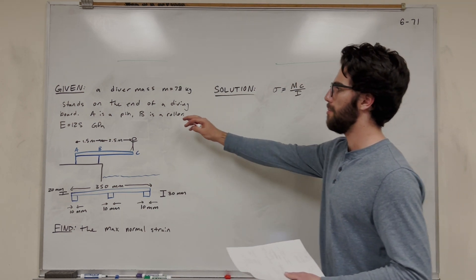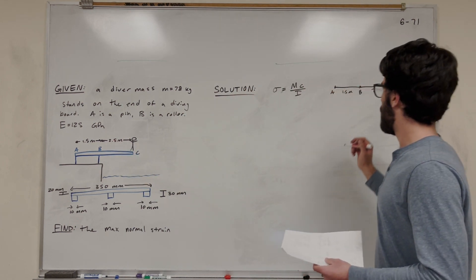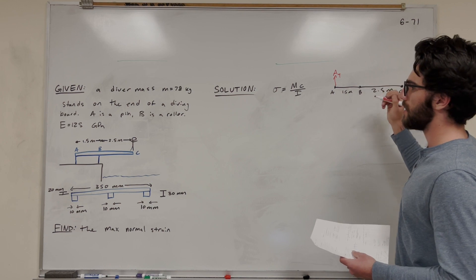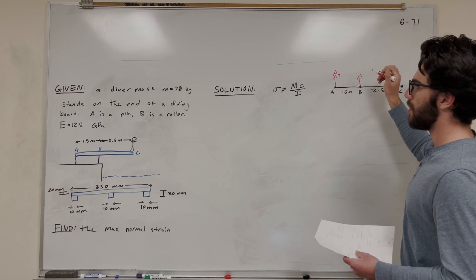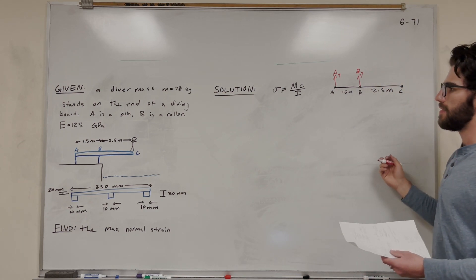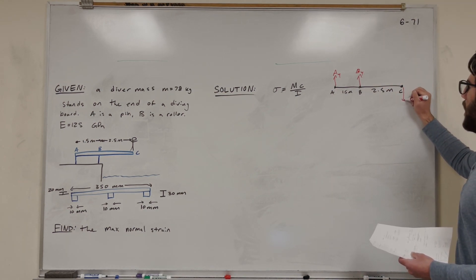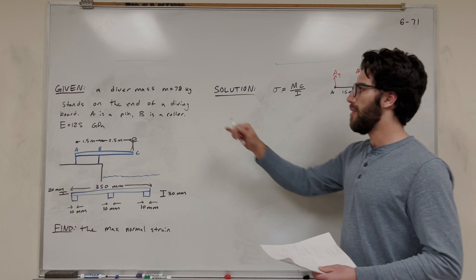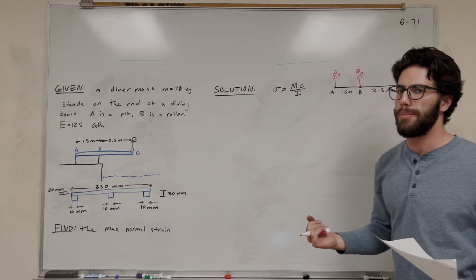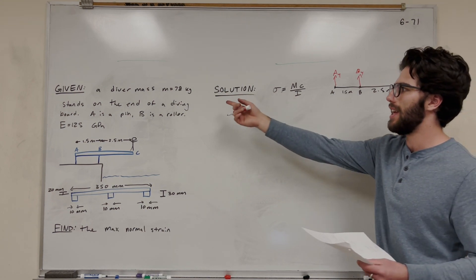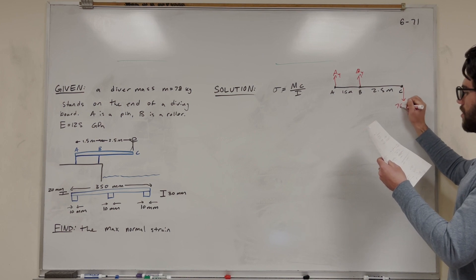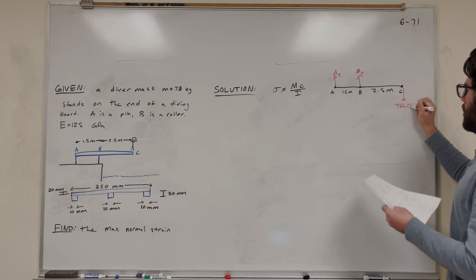We have A as a pin and B as a roller. So we're going to draw A going up — A_y. Then B as a roller, so that's going to go up — B_y. Then we have C, which is our person, so that's going to be a weight going downward. Our given mass is 78 kilograms. To convert mass to a force, we multiply by gravity: 78 times 9.81 gives us 765.18 newtons.